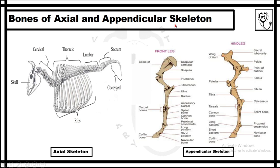The appendicular skeleton consists of the pectoral girdle, pelvic girdle, forelimb, and hind limb. There is variance in the bones and shape of the pectoral and pelvic girdle in different species of animals. The forelimb includes the humerus, radio-ulna bone, small carpal bones, metacarpal bones, and phalanges.